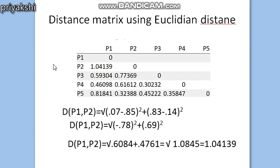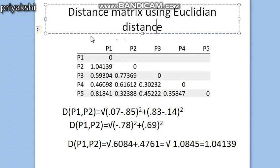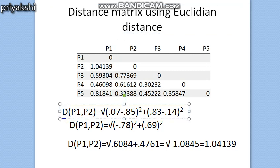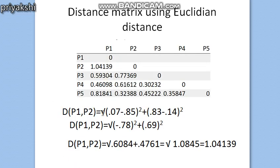Since there are five students, the distance matrix will be 5×5. You can use either the upper or lower triangular matrix. The distance function used here is Euclidean distance. The diagonal elements will be zero. For example, the distance between p1 and p2 using Euclidean distance is: √((0.07 − 0.85)² + (0.83 − 0.14)²).